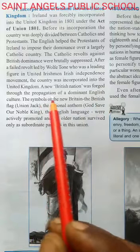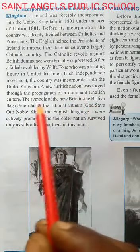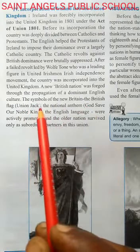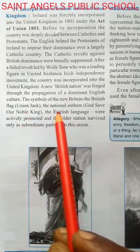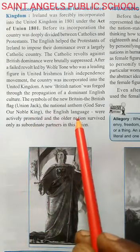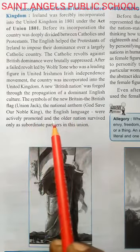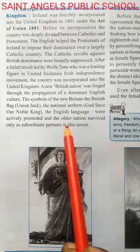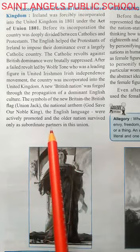A new British nation was forged through the propagation of a dominant English culture. Ek naye British rastra ka nirman hua jahan par English culture, English sanskriti sab par havi thi. The symbol of the new Britain — the British flag, Union Jack — ko apnaya gaya. British ki jo national flag, Union Jack, isi ko apnaya gaya. British ki national anthem, 'God Save Our Noble King', yahi yahan ki national anthem bani. The English language was actively promoted. Aur jo bhashaein ye log bola karte the, English bhasha usi ko yahan par badhawa diya gaya. And all older nations survived only as subordinate partners in this union. Uske alawa baaki jitne bhi Ireland, Scotland jaise nations the, wo sab is union mein ek subordinate partner ke tarah shamil kiye gaye.